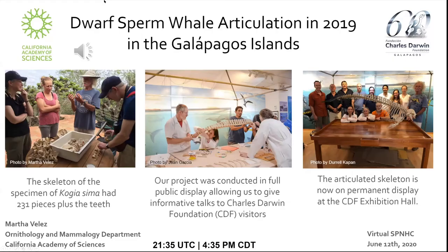Martha Velez presents 'Dwarf Sperm Whale Skeleton Articulation at the Charles Darwin Foundation in the Galapagos Islands.' My name is Martha Velez and I'm a curatorial assistant in the ornithology and mammalogy department at the California Academy of Sciences in San Francisco. Today I'm presenting the dwarf sperm whale articulation in the Galapagos Islands. In January 2019, I helped with the assembly and reconstruction of a dwarf sperm whale — Kogia sima — skeleton that washed ashore in August 2015 on Isabela Island in the Galapagos.